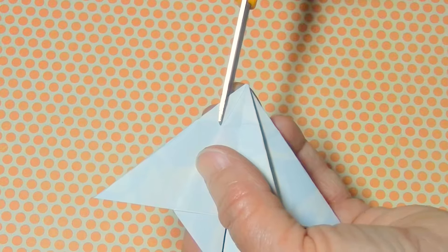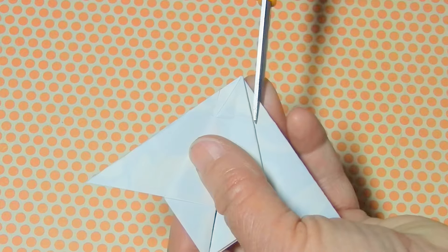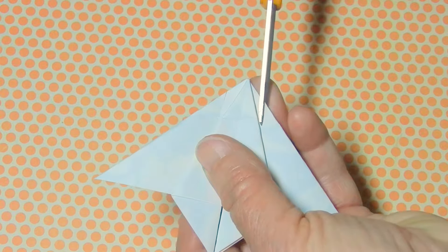Make a slit all the way down on each side of your point to that imaginary line.